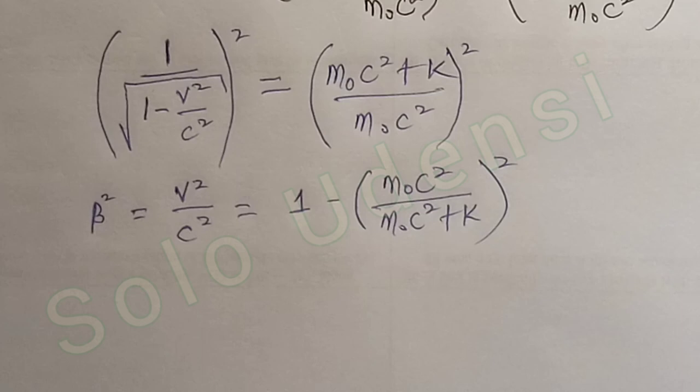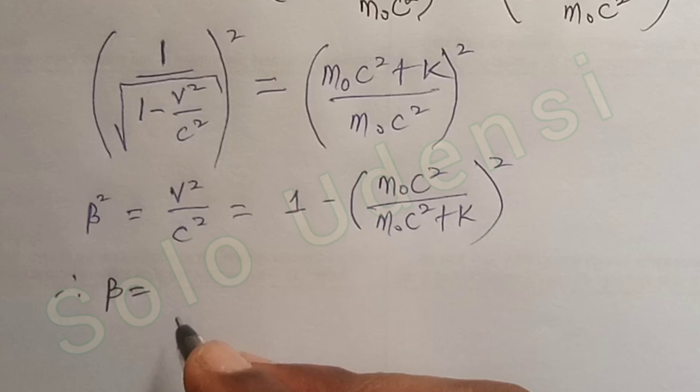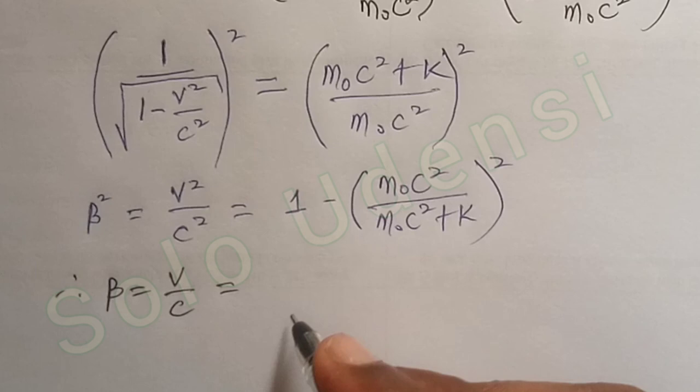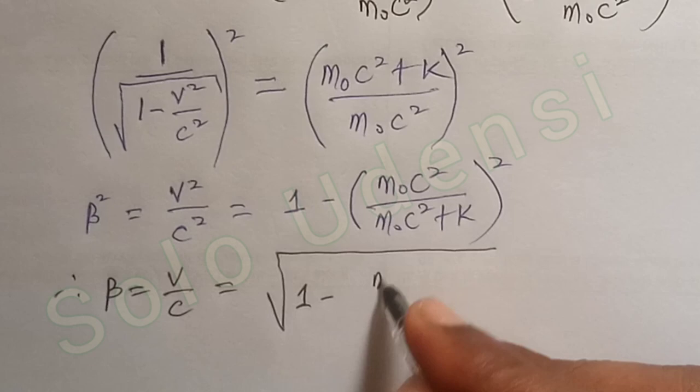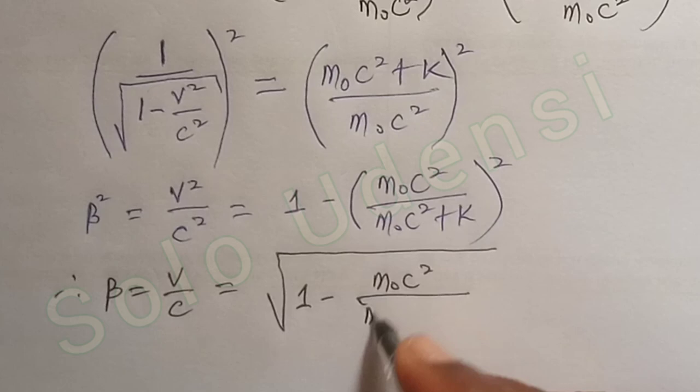Therefore, beta, which is the speed parameter v over c, is equal to the square root of 1 minus (M₀c² over M₀c² + K) all squared.